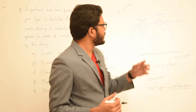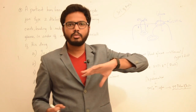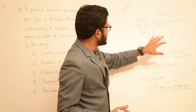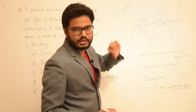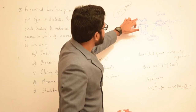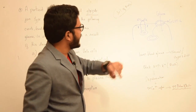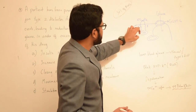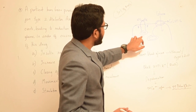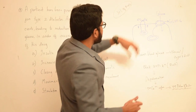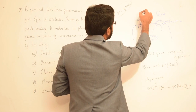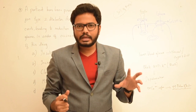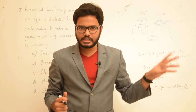Once insulin is released, it binds to insulin receptors which are present in almost all cells in the body. As you can see, the insulin receptor has two alpha units and two beta units which are combined by disulfide bonds. The alpha subunits act as receptors for insulin, whereas the beta subunits contain the enzyme tyrosine protein kinase. The moment there is insulin binding, there will be a series of complex dephosphorylation as well as phosphorylation reactions happening.